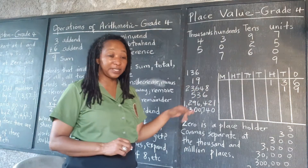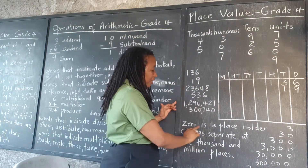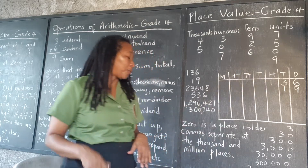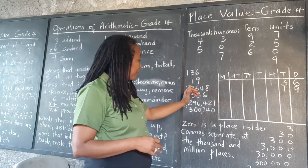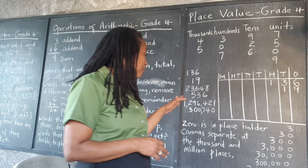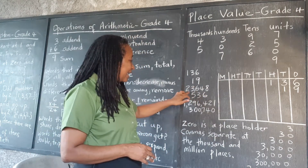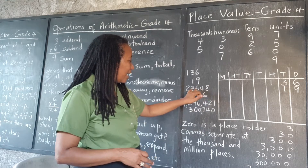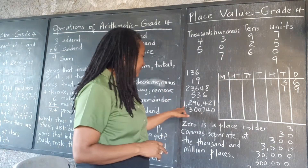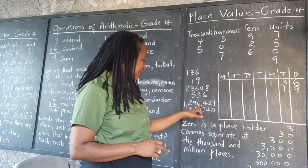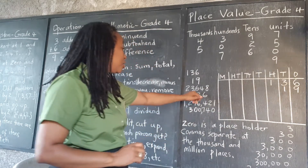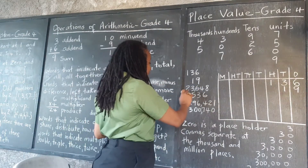Twenty-three thousand. Notice what it says here: zero is a placeholder, and commas separate at the thousands and millions places. When writing numbers, once we get to the thousands we put a comma between the thousands and the hundreds. Where you see the first comma, that indicates thousands. The second comma indicates millions. So this number here is one million two hundred and ninety-six thousand four hundred and twenty-one. Twenty-three thousand — you can use the comma and write it as 23,000.